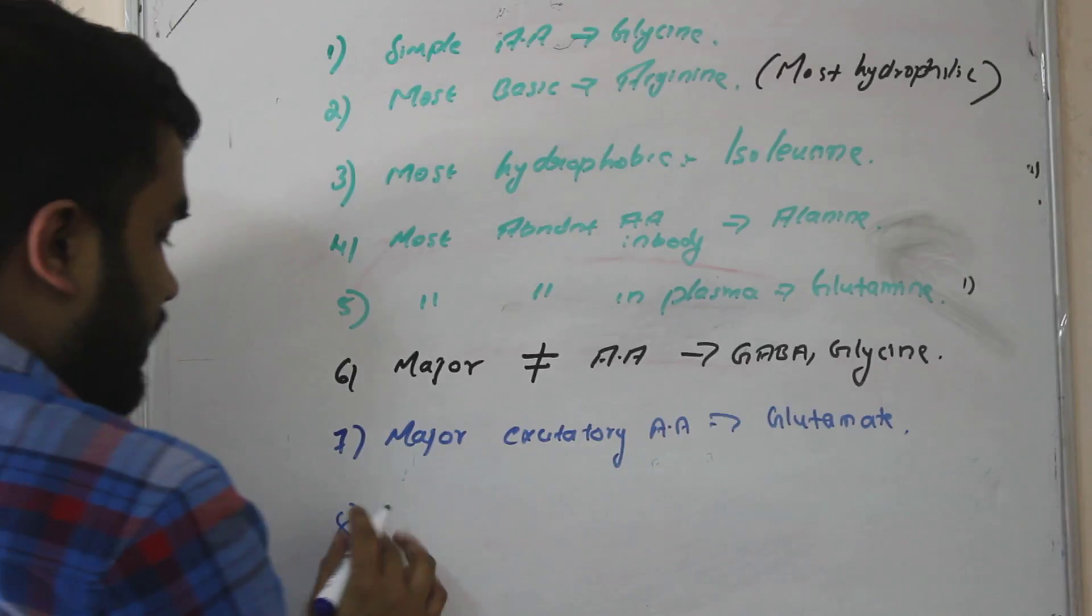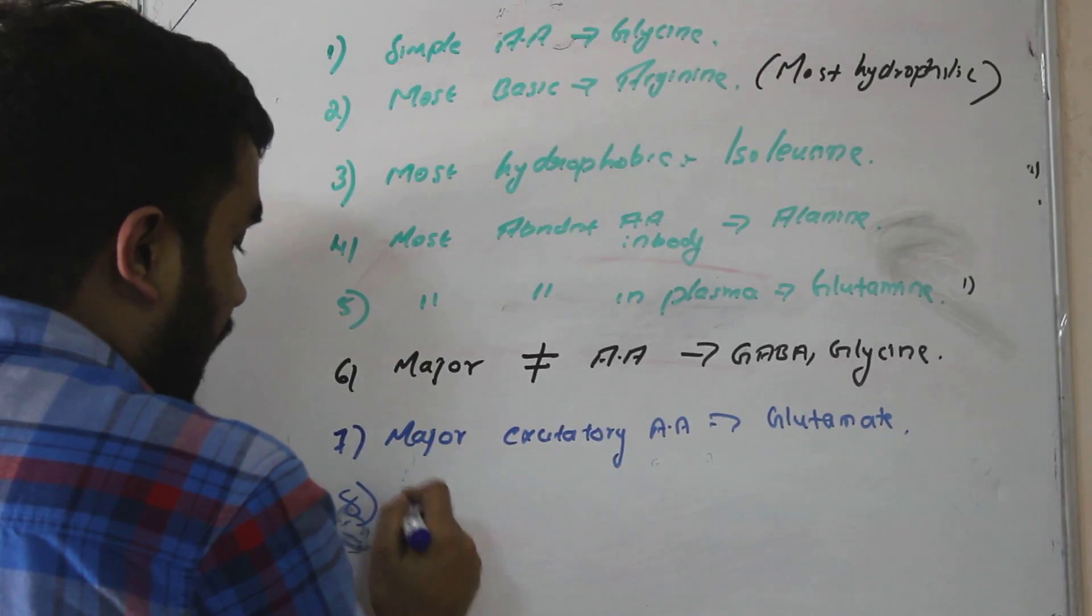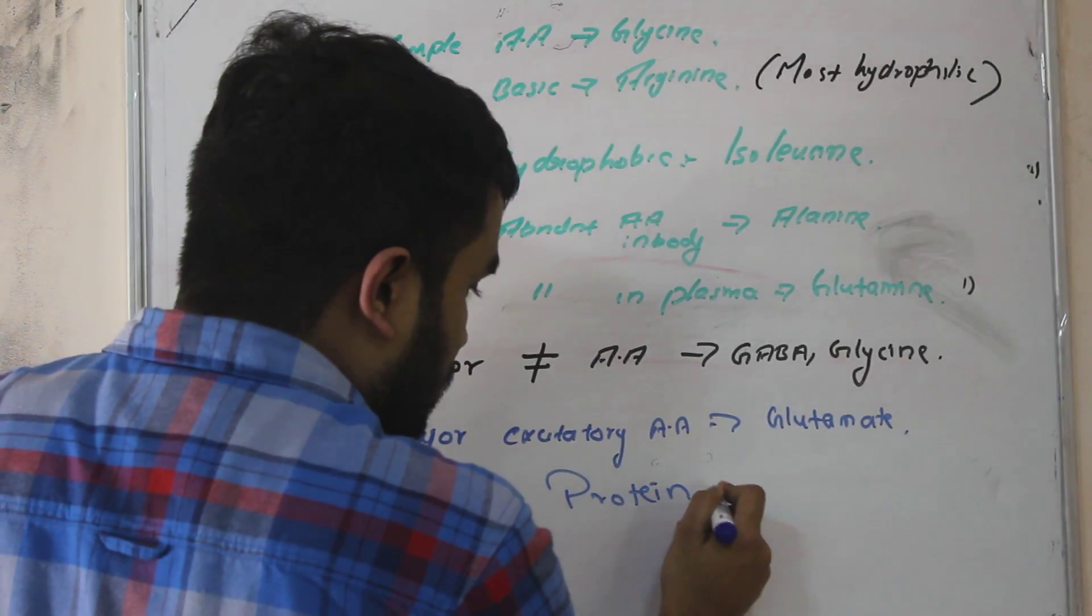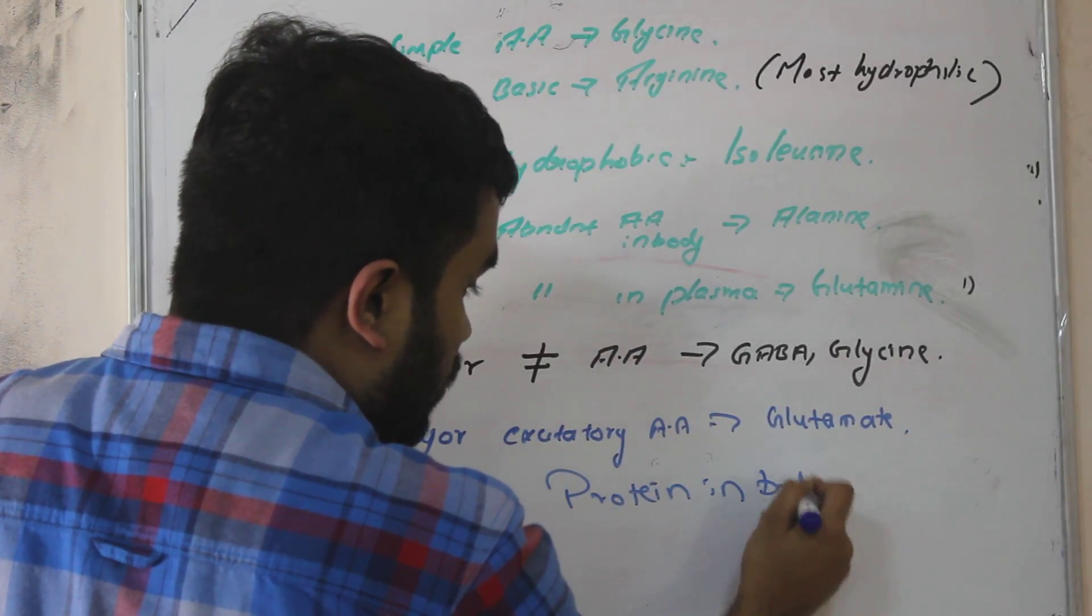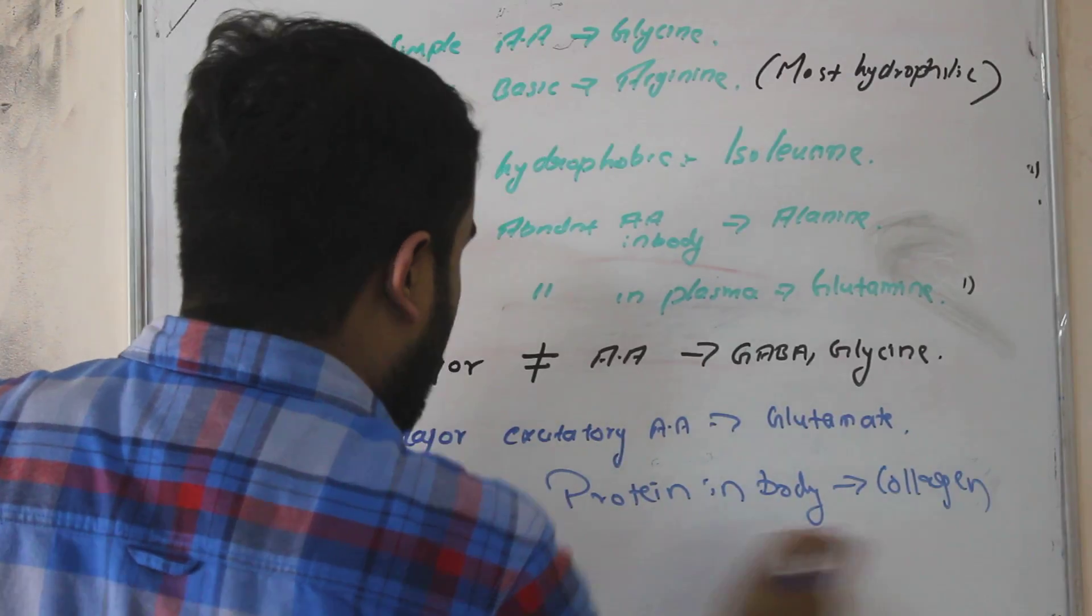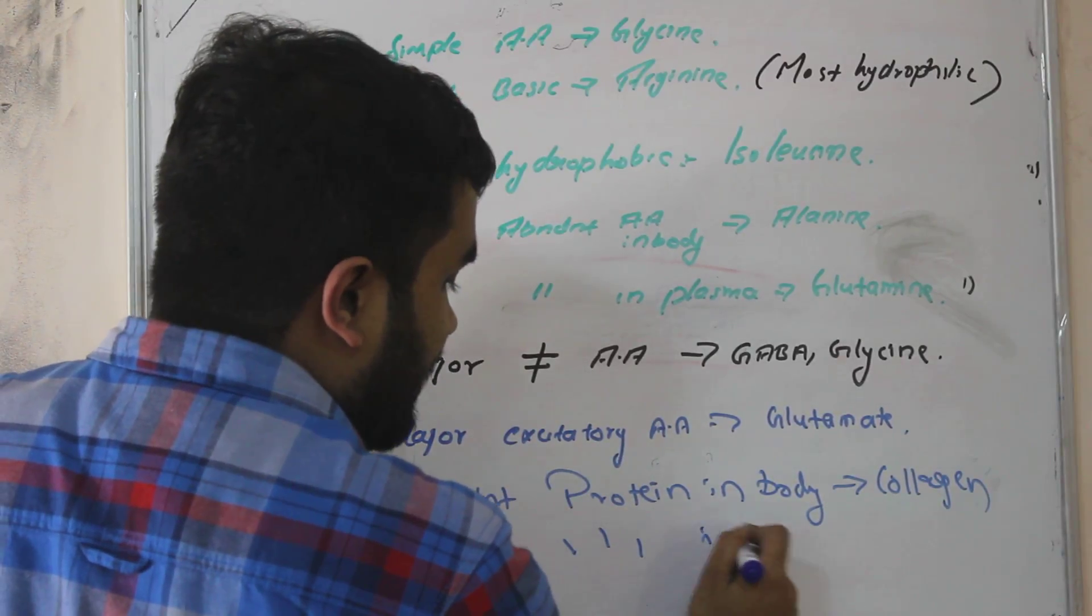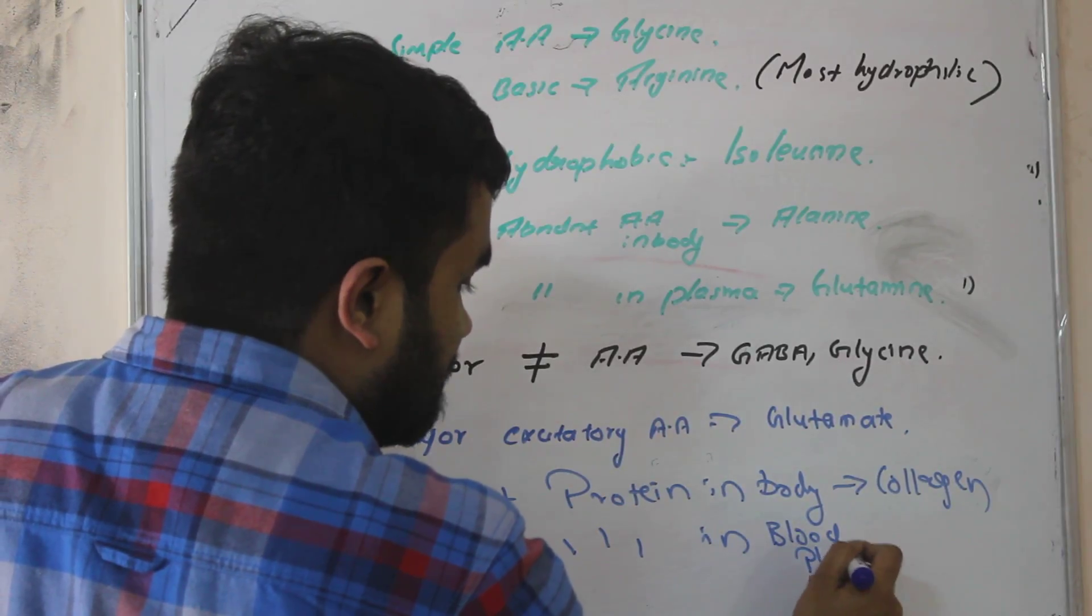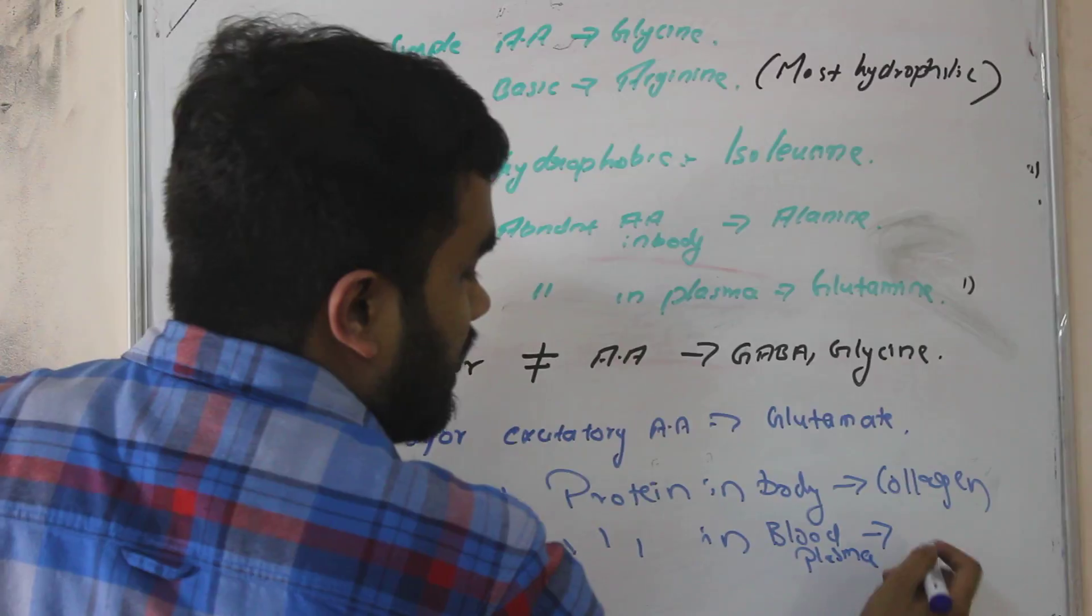I am adding one more point here. Abundant protein in body. Abundant protein in the total body, what is that? Collagen. Same question, abundant protein in blood plasma, what is that? The blood plasma, it will be albumin.